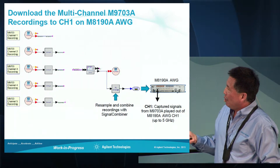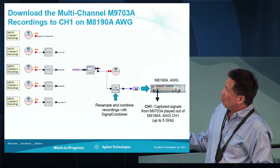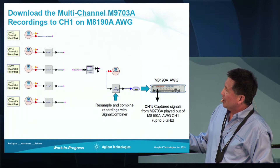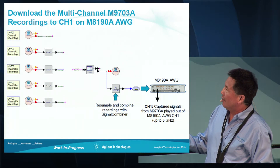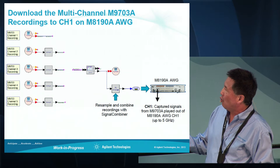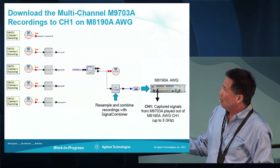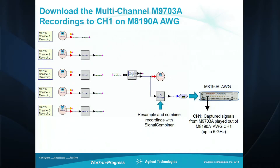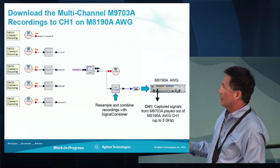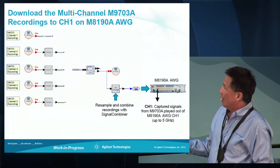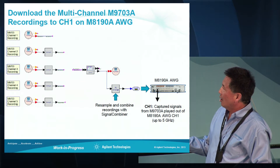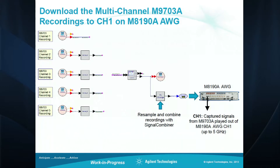To read these signals into simulation once they've been captured, we use the VSA source elements. We have the captured recordings on channels one, two, three, four, and five of that eight-channel phase coherent digitizer. These captured signals are then resampled and combined into one waveform, which is downloaded to channel one of the AWG.